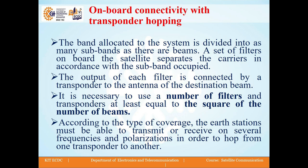Let us discuss onboard connectivity with transponder hopping. The band allocated to the system is divided into as many subbands as there are beams. A set of filters onboard the satellite separates the carriers in accordance with the subband occupied. The output of each filter is connected by a transponder to the antenna of the destination beam. It is necessary to use a number of filters and transponders at least equal to the square of the number of beams.